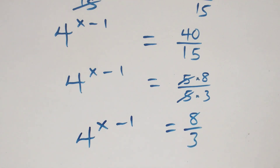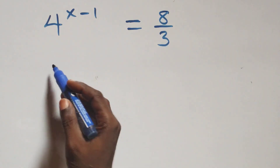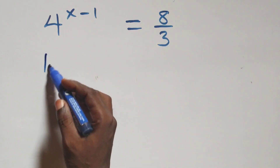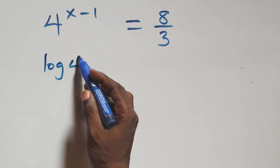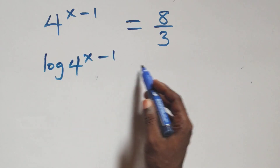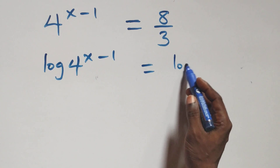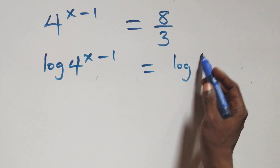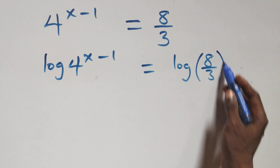The next step: we take the log of both sides. That is, log of 4 raised to the power x minus one equals log of 8 over 3.